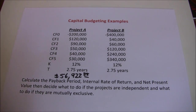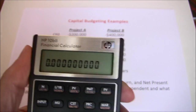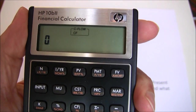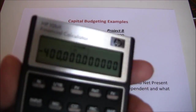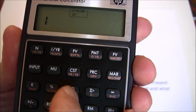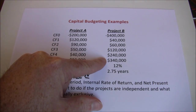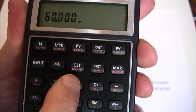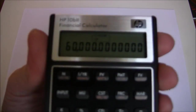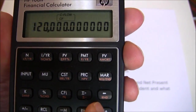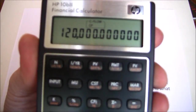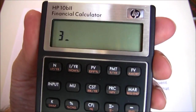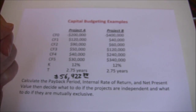Now we can go ahead to project B. Again, let's clear out our calculator: shift, clear all. Start with our initial cash flow: negative 400,000, CFJ. Then 40,000, CFJ. Again, frequencies are all one so we don't have to worry about N-sub-J. Then 60,000, CFJ. Then 120,000, CFJ. Then 240,000, CFJ. Then 340,000, CFJ. All our cash flows are entered.